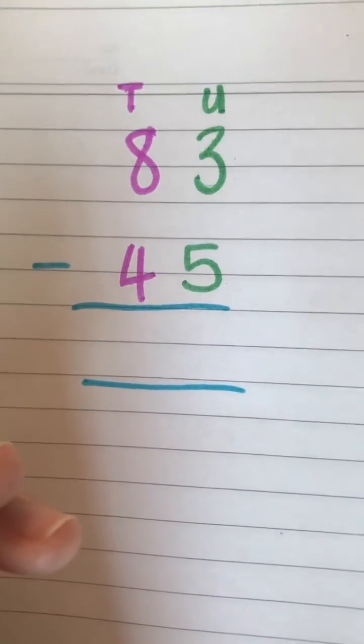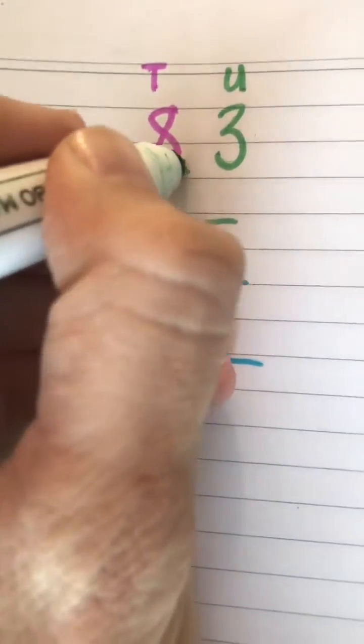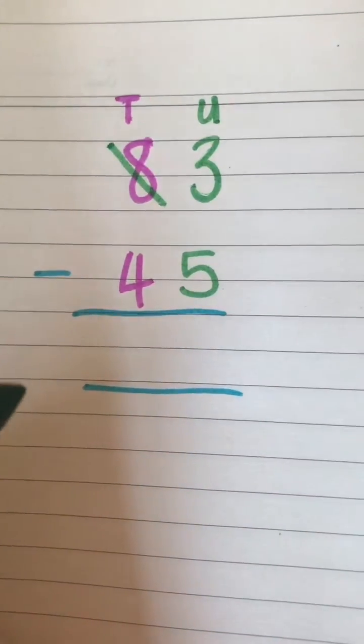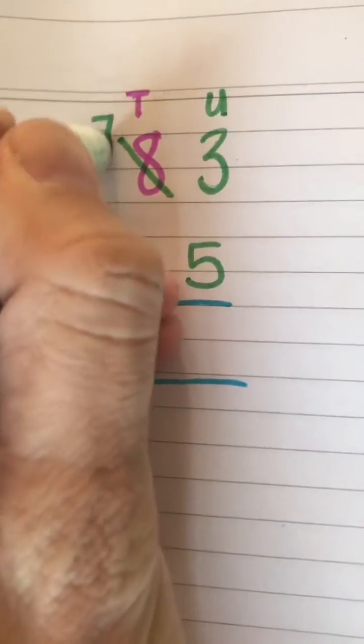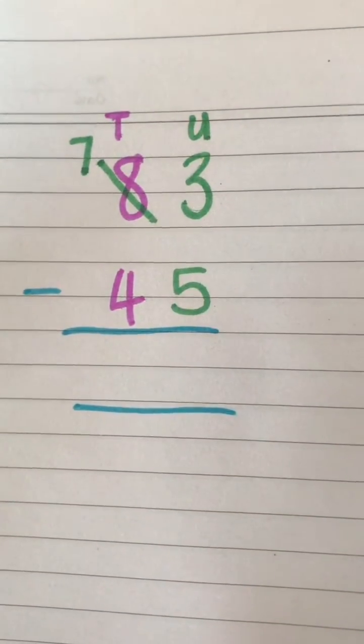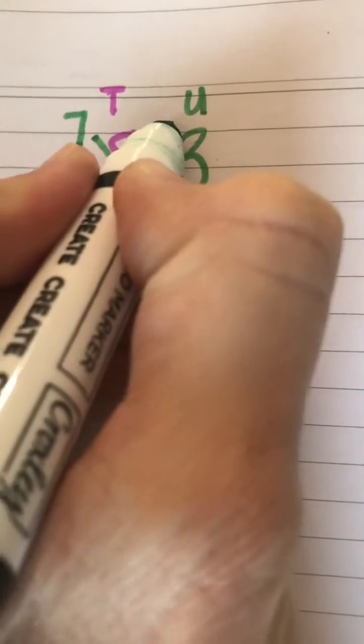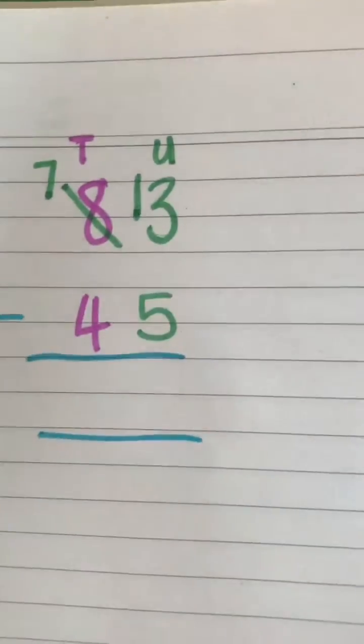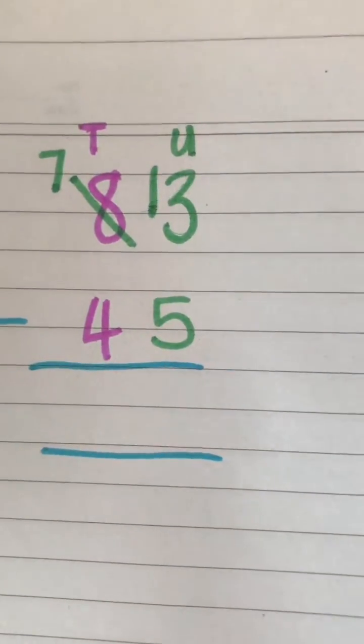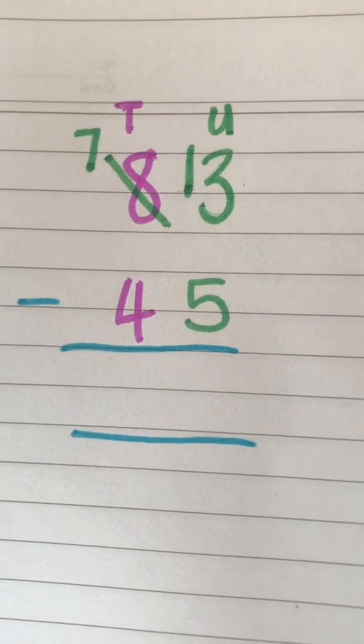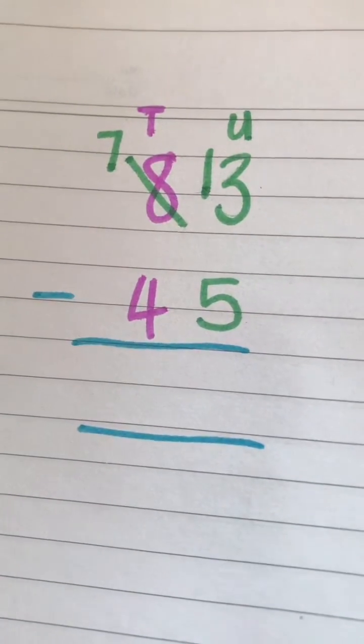become a 7, standing for 70. Okay, and I give that 10 that I took away—I'm going to give it to my units column. So now I've got 13. Okay, does everybody understand that part? Right, now my sum is actually 13 minus 5. That I can do, okay? 13 minus 5 gives me—count on your hands—gives